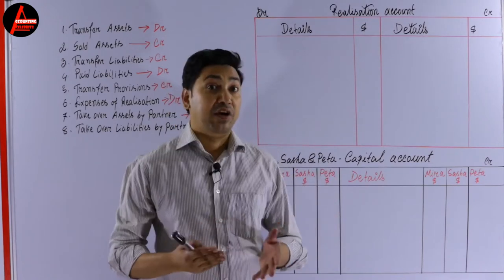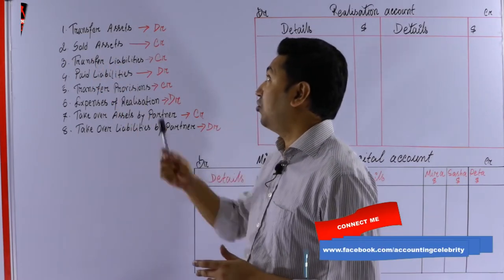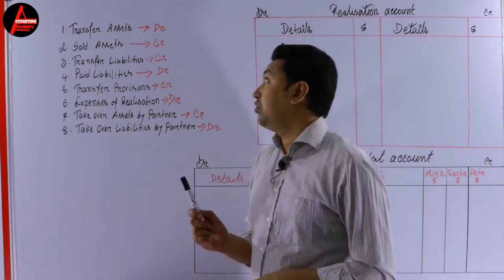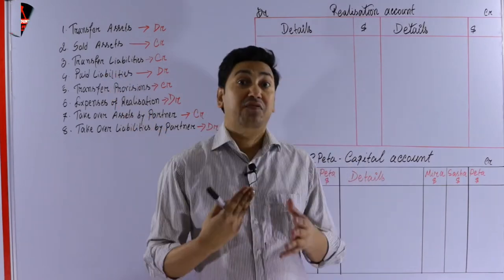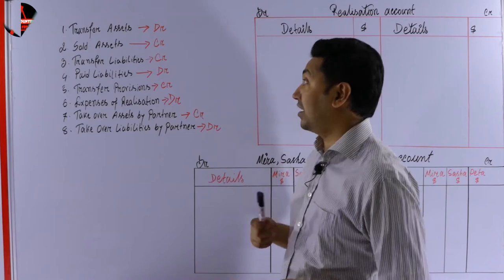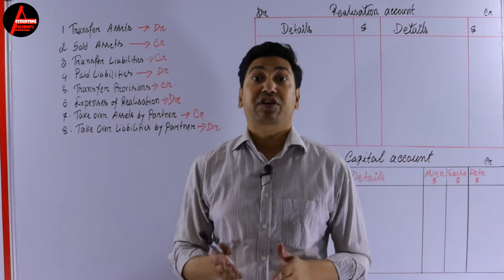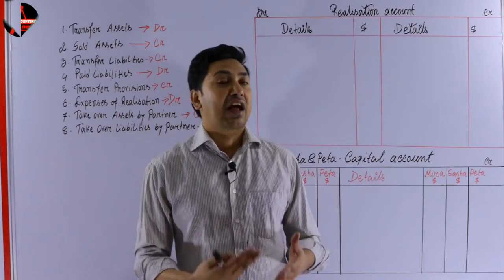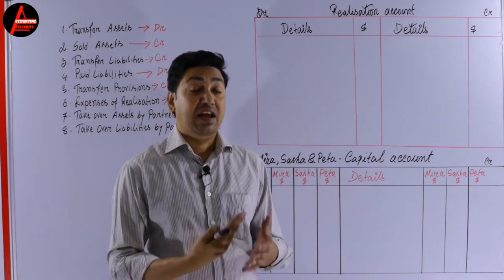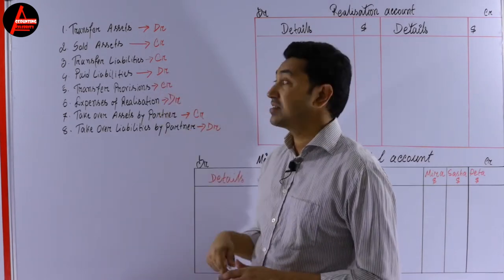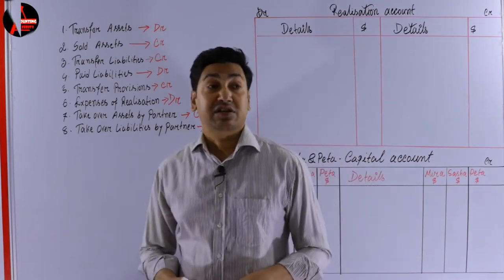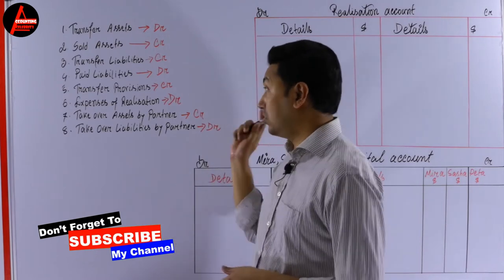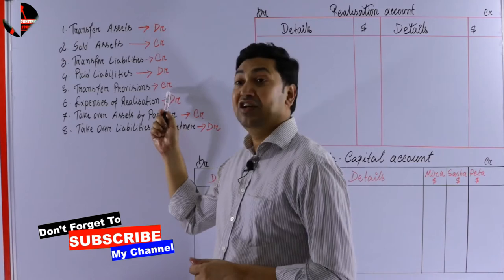Before doing the realization account, we need to know some important points. First, transfer of assets will be debited — whatever assets we have in the statement of financial position, we transfer them to the realization account on the debit side. Second, if any asset is sold, we record it on the credit side. Third, transfer of liabilities — whatever liability we transfer to the realization account goes on the credit side. Fourth, paid liabilities — if any liabilities are paid during dissolution, we record them on the debit side.